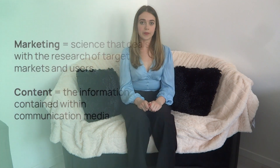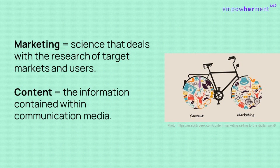To understand what content marketing is, we should first look at its two keywords separately. Marketing is a science that deals with the research of target markets and users. The aim is to establish profitable relationships with users. To put it in simpler words, marketing is the process of identifying customer needs and determining how to meet those needs in the best way possible. The second word is content. Content is the information contained within communication media. This includes the internet, cinema, television, radio, audio CDs, books, magazines, physical art and live event content. It's directed at an end user or audience in the publishing, art and communication sectors.